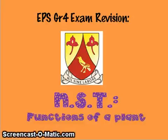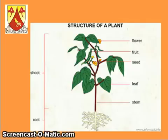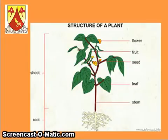Right, grade fours, today's section that we need to study is NST, and we're looking at functions of a plant. First of all, you need to know these six definitions. It's a nice, easy section. You basically need to know what the point of the root is, the stem, the leaf, the seed, the fruit, and the flower — what those do and how they help the plant. So let's look at each one.